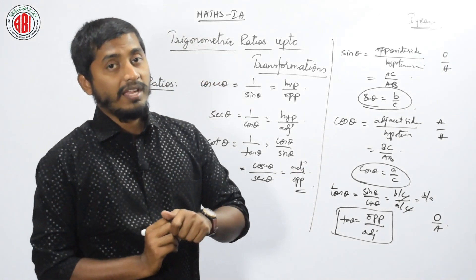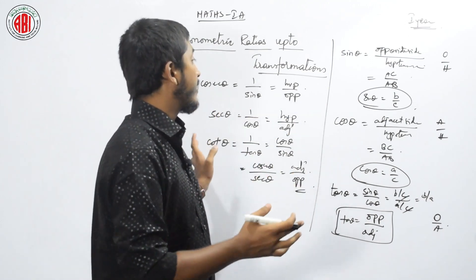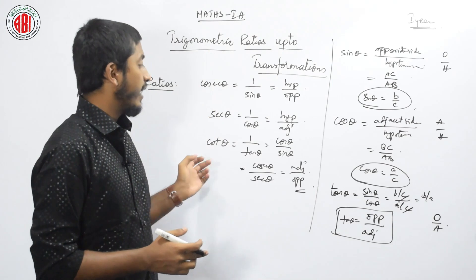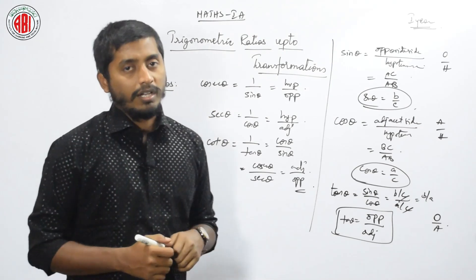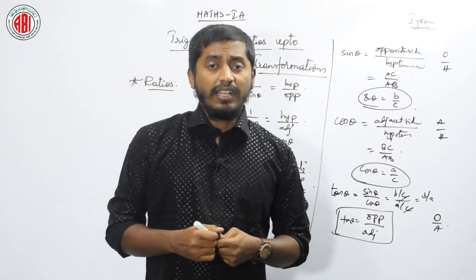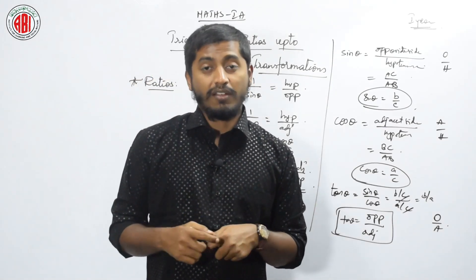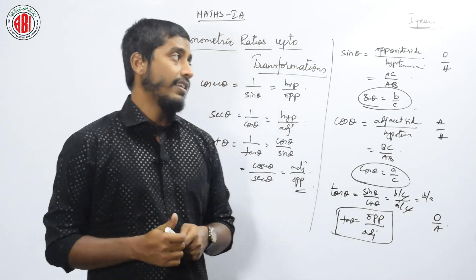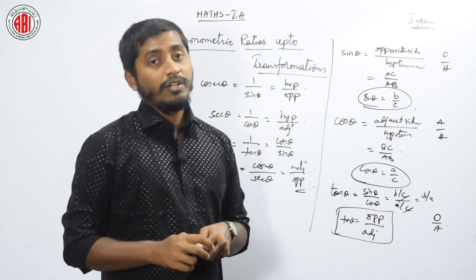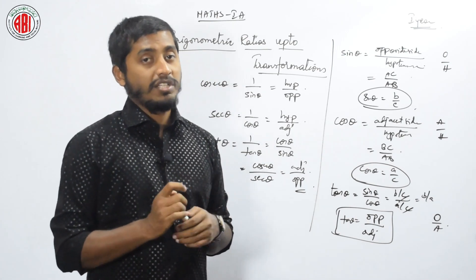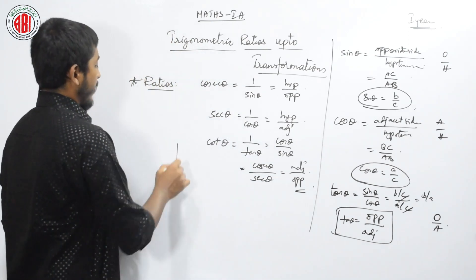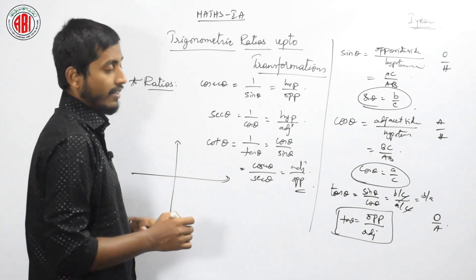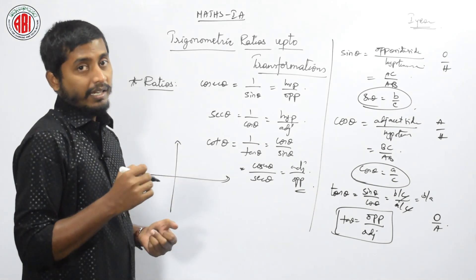How many ratios have we seen? We have seen 6 different kinds of ratios: sin, cos, tan, cosecant, secant, and cot. These are the 6 ratios we must remember in trigonometry. Now let us see how they are going to vary in different positions, for example on the coordinate axis at angle theta.